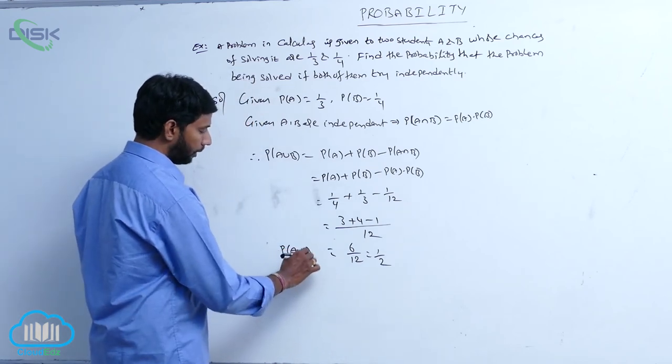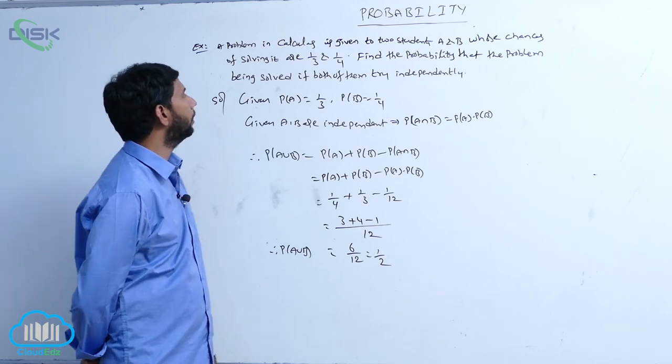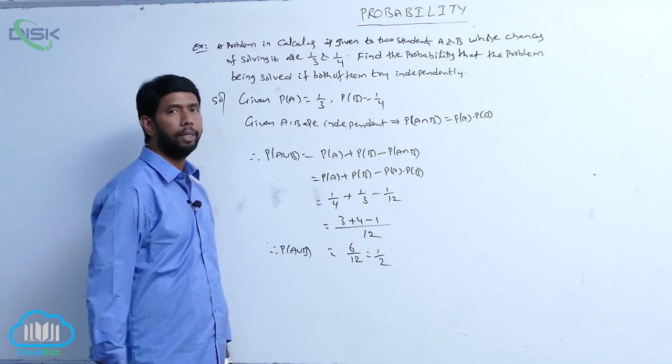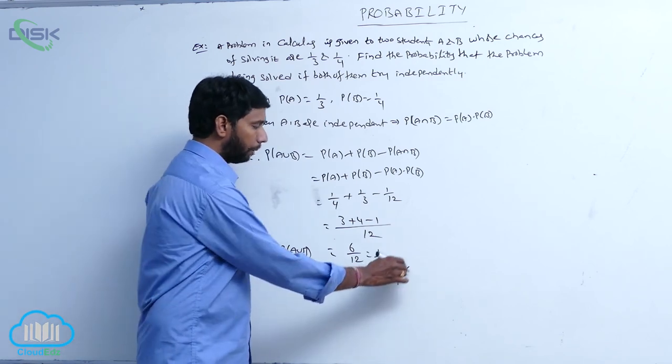The probability of the problem being solved if both of them try independently is P of A union B is equal to 1 by 2.